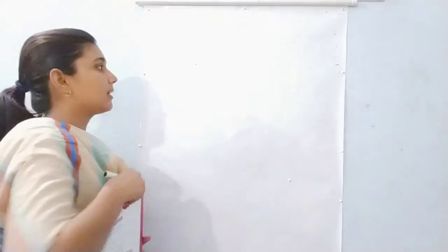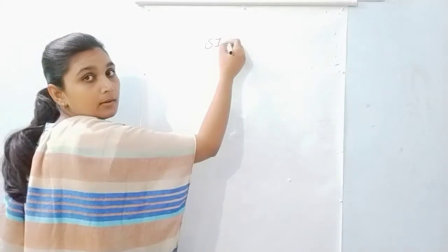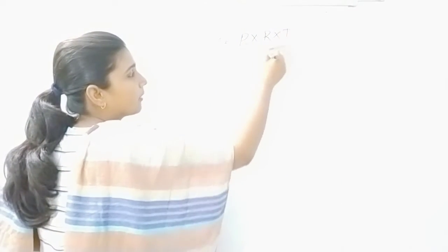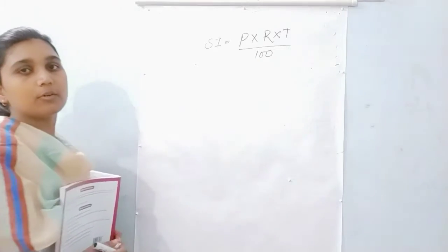Question number one of this exercise is: find the simple interest on Rs.752 at 2% per annum for 2 years. Aapko SI find karna hai. Principle diya gaya hai Rs.752, rate diya gaya hai 2%, aur time diya gaya hai 2 years. So we have to find the SI. The formula of SI is: SI equals P multiplied by R multiplied by T upon 100.